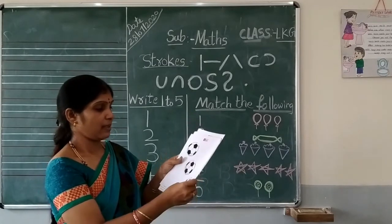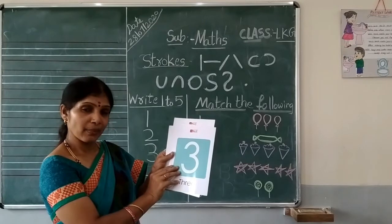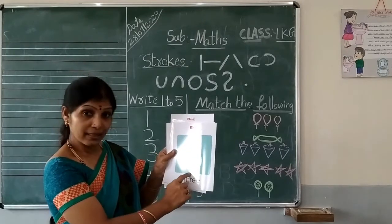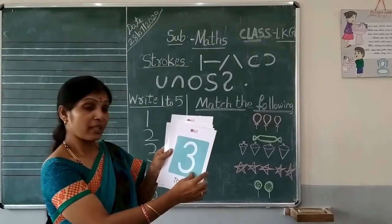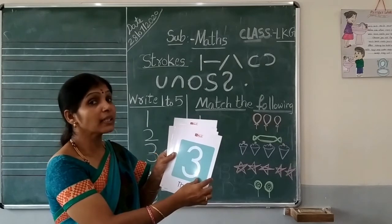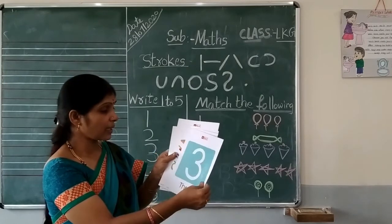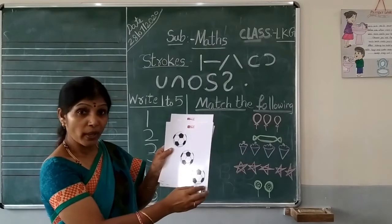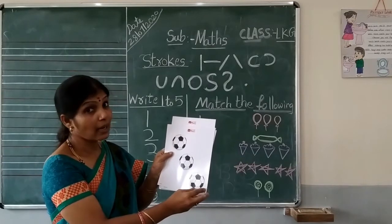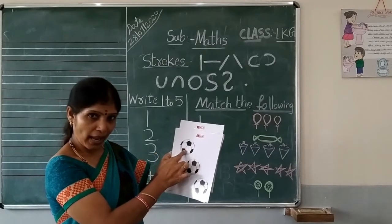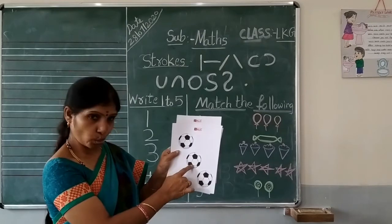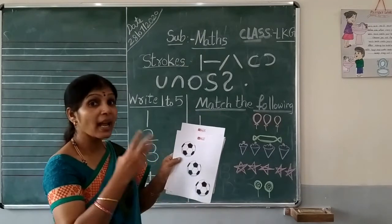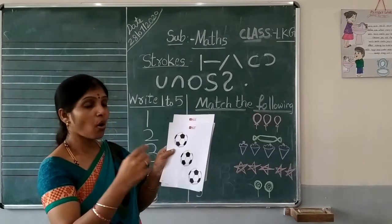Next, which number? 3. Number 3. Which number? Number 3. Yes. Here, how many balls are here? Let's count. 1, 2, 3. How many balls are here? 3 balls.